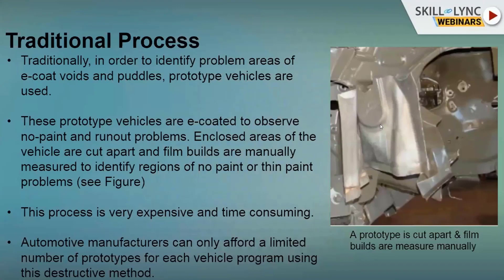The second issue is puddles. When the vehicle comes out of the paint solution, some extra paint remains on the metal parts. In the oven process, that extra paint gives a very bad appearance to the vehicle. To identify these problems, they used to cut prototype vehicles apart and manually measure the paint thickness of sections to observe areas with no paint or thin paint.